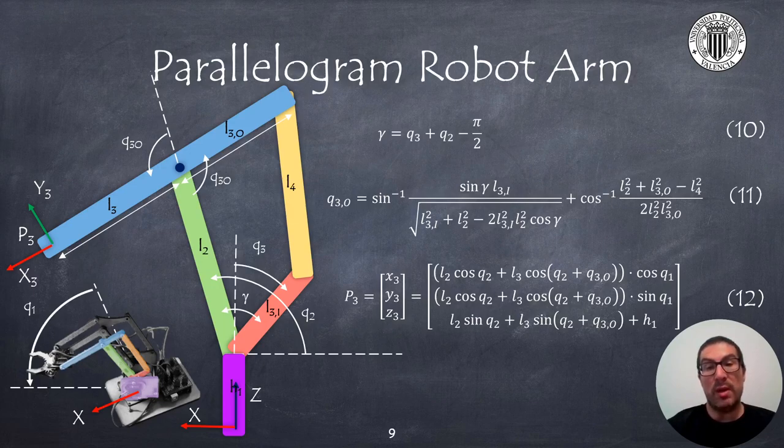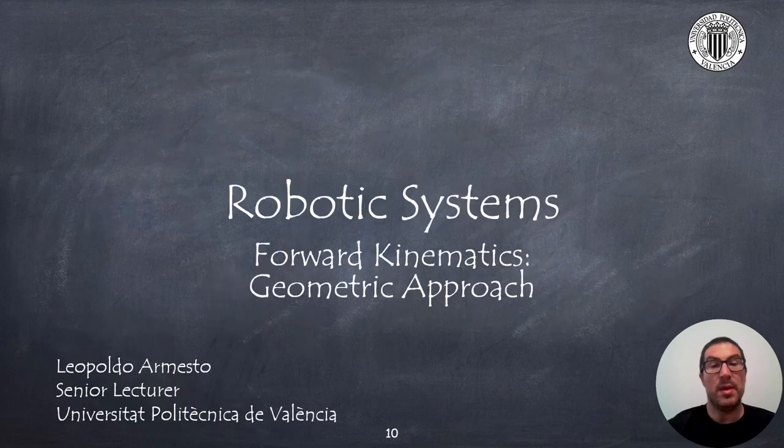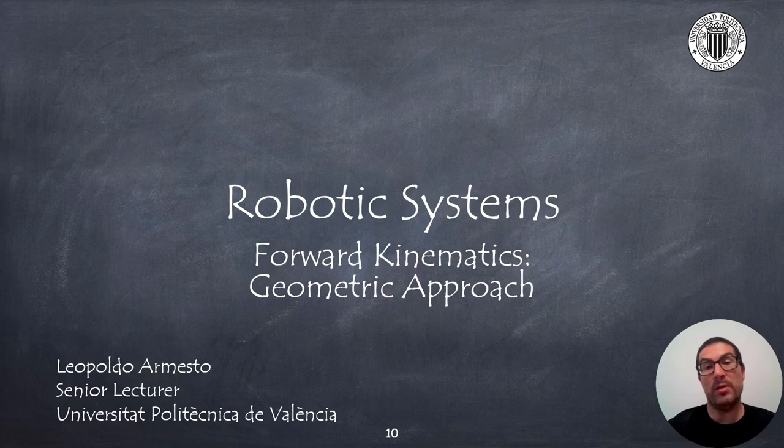And expression 12 expresses the forward kinematics of the robot with 3 degrees of freedom, as previously seen. In this presentation, a study on how to compute the forward kinematics of a robot with geometric methods has been carried out. Thank you very much.